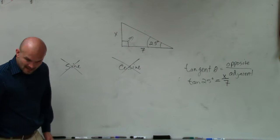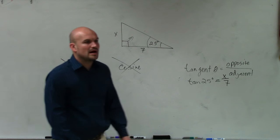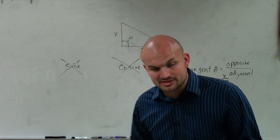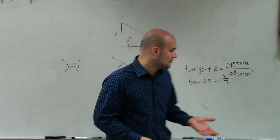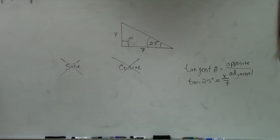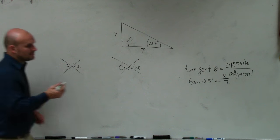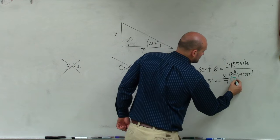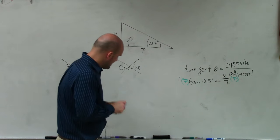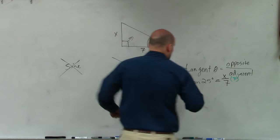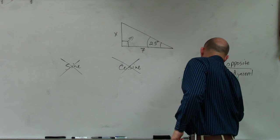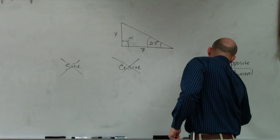Now, just like any other math problem, tangent of 25 degrees is going to give us a number. So we need to solve for x. To get the x off the bottom, I'll multiply by 7 on both sides. And therefore, what I have now is x equals 7 times the tangent of 25 degrees.